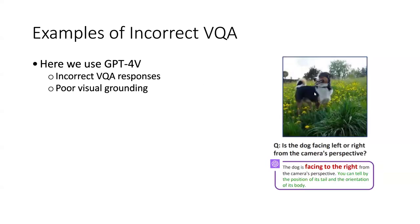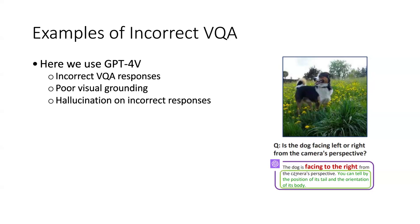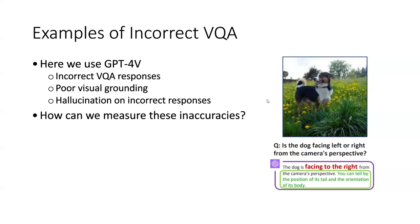Here is a second example. We ask the model: is the dog facing left or right from the camera's perspective? We can easily tell the dog is facing to the left. However, the answer from the model is facing to the right. Moreover, the model gives an explanation of the answer, which is also incorrect. From this example, we can tell that the model sometimes has hallucinations on incorrect responses. So how can we measure these inaccuracies?